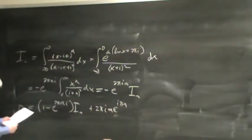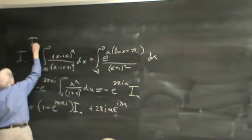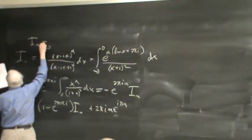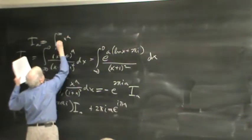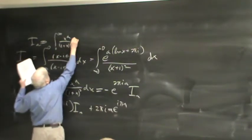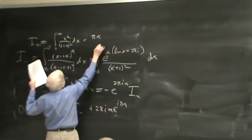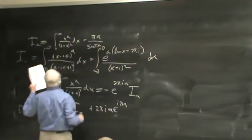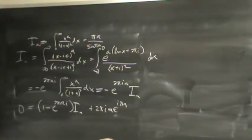So I_a = ∫₀^∞ x^a/(1+x)² dx = πa/sin(πa). This is an example of using ghost contours to evaluate integrals when we have a function that has a cut.